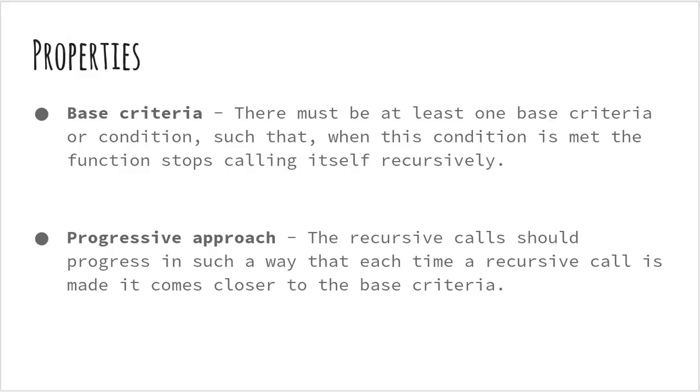You can kind of think of this like a loop. What happens if you don't increment or decrement a variable such that eventually the base criteria is met? It's very easy for the loop to go to infinity. Similarly with recursion.